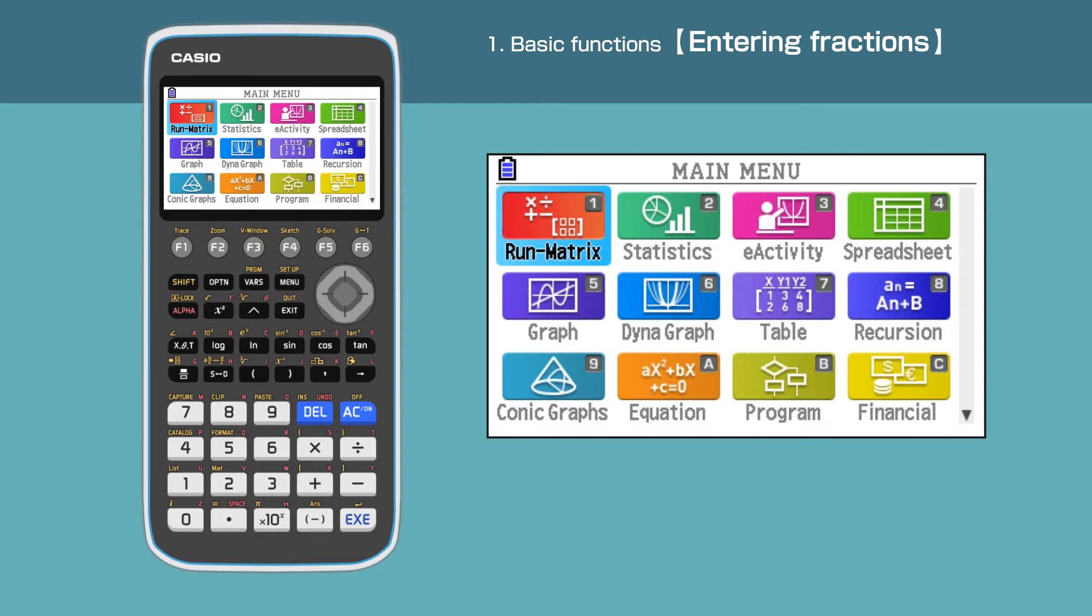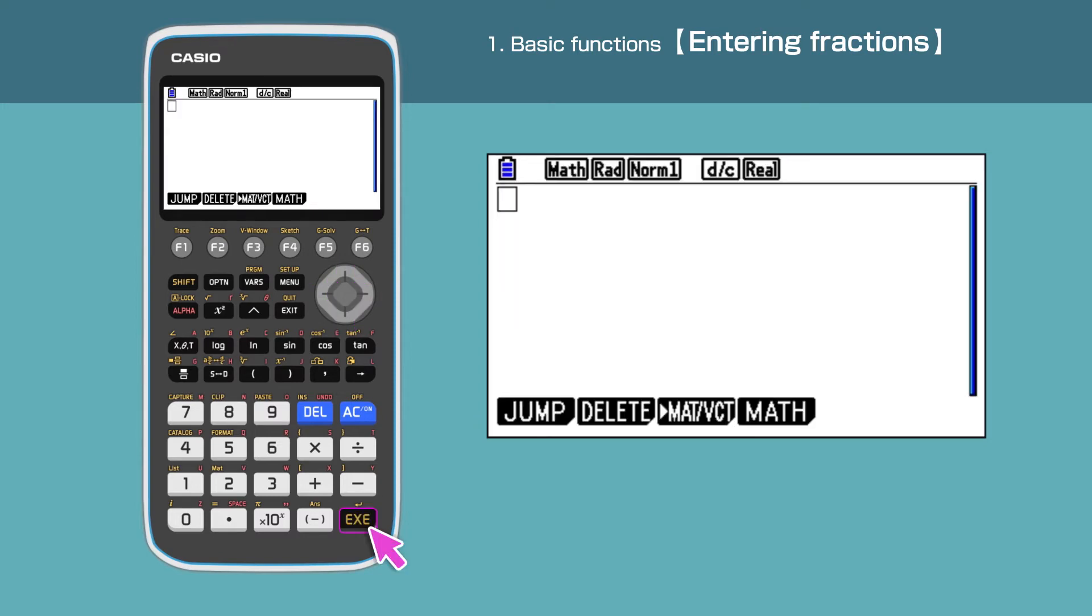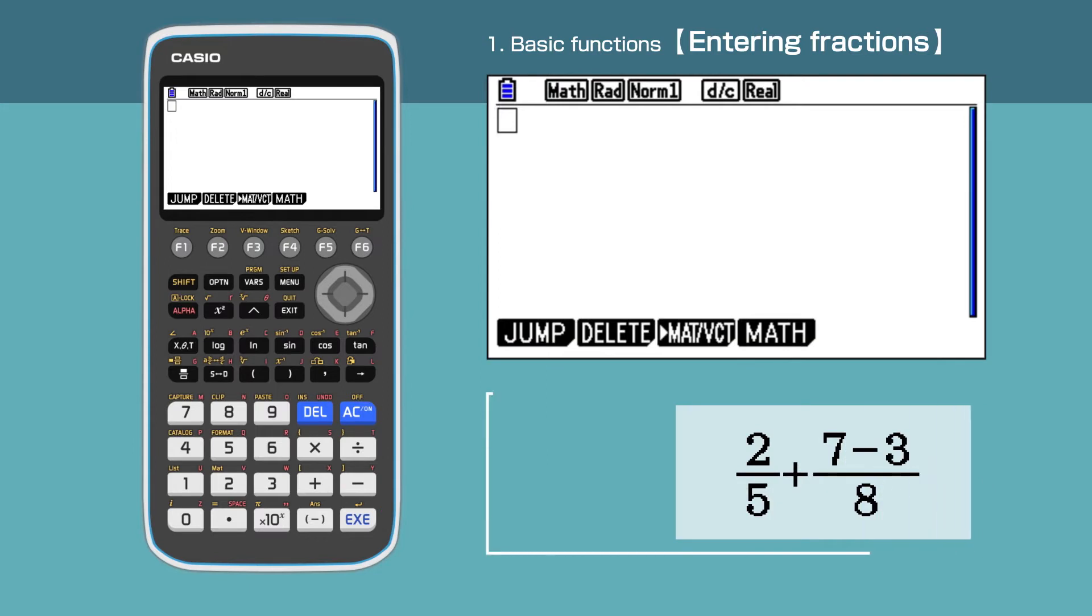Press 1 to enter the run matrix menu, or move the cursor and highlight 1 run matrix, then press execute. First, we will show you how to enter fractions. Press the fraction button and enter 2 in the numerator box.